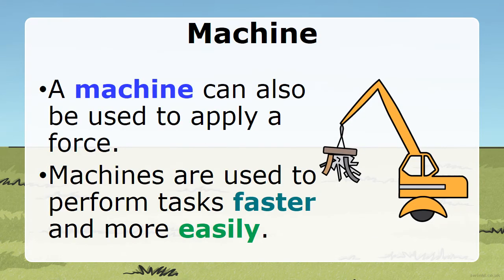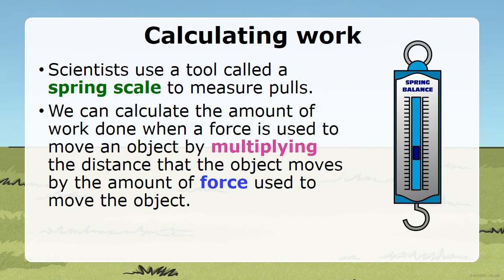Machines. A machine can also be used to apply a force. Machines are used to perform tasks faster and more easily. How do we calculate work? Scientists use a tool called a spring scale, which is used to measure pulls. We can calculate the amount of work done when a force is used to move an object by multiplying the distance that the object moves by the amount of force used to move the object.